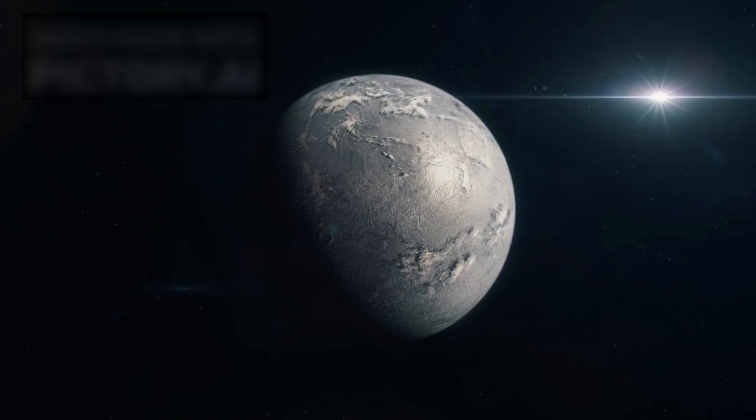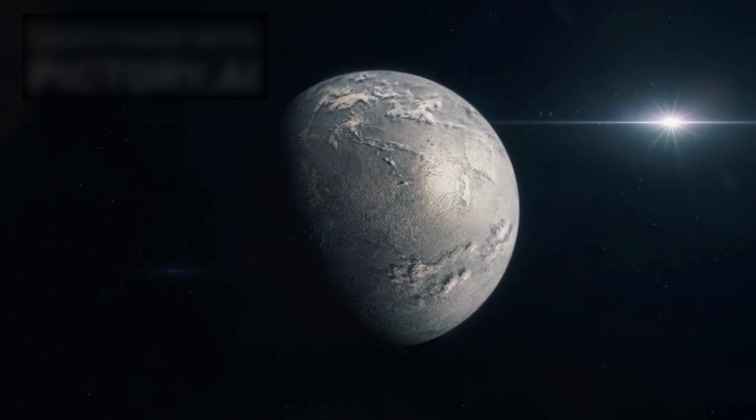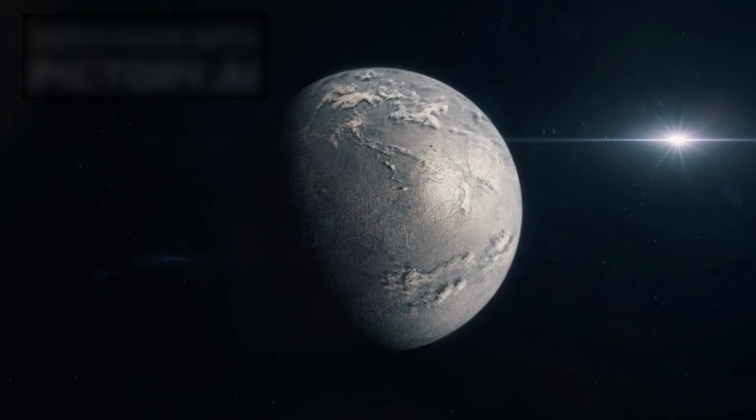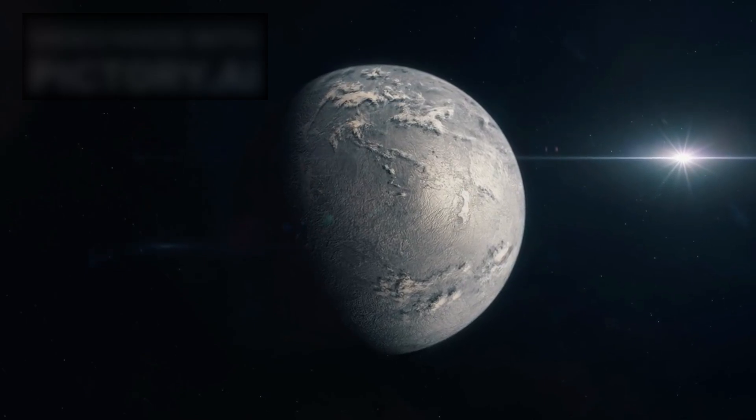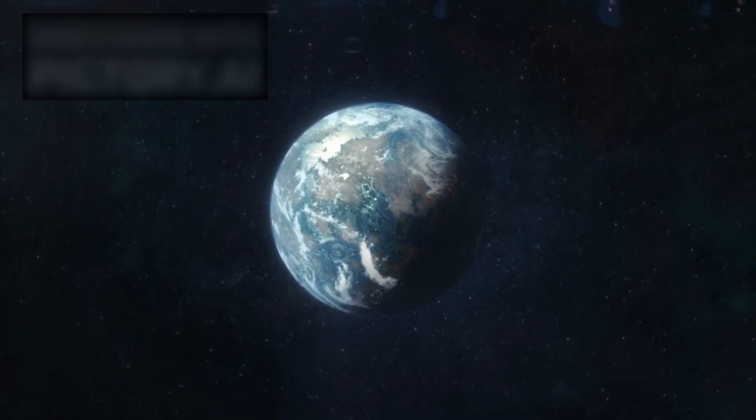Proxima b receives a similar amount of stellar energy as Earth does from the Sun, raising the possibility that liquid water could exist on its surface. However, its environment is far from simple.